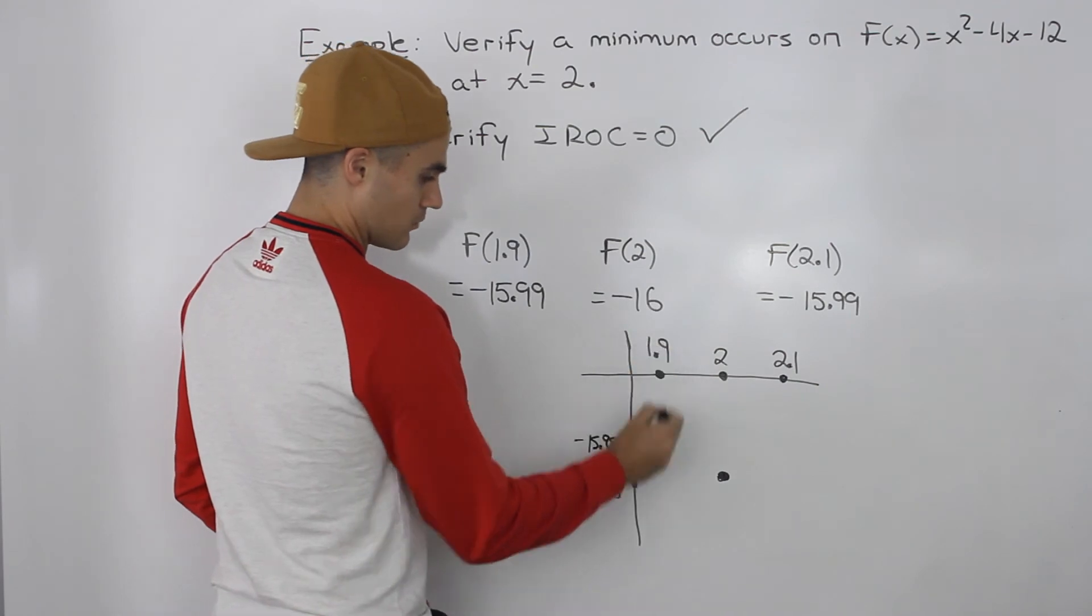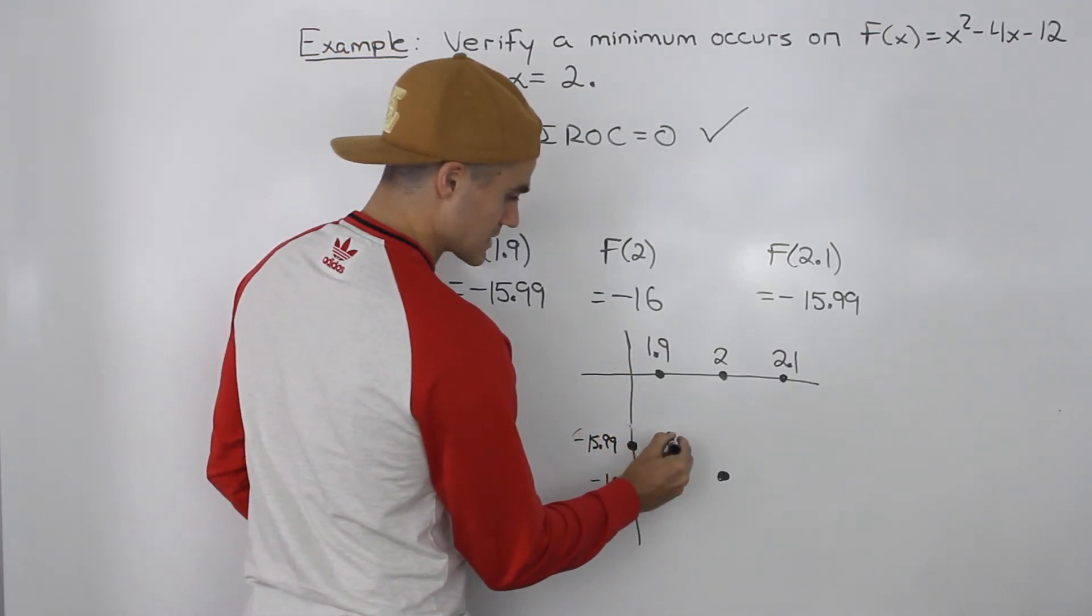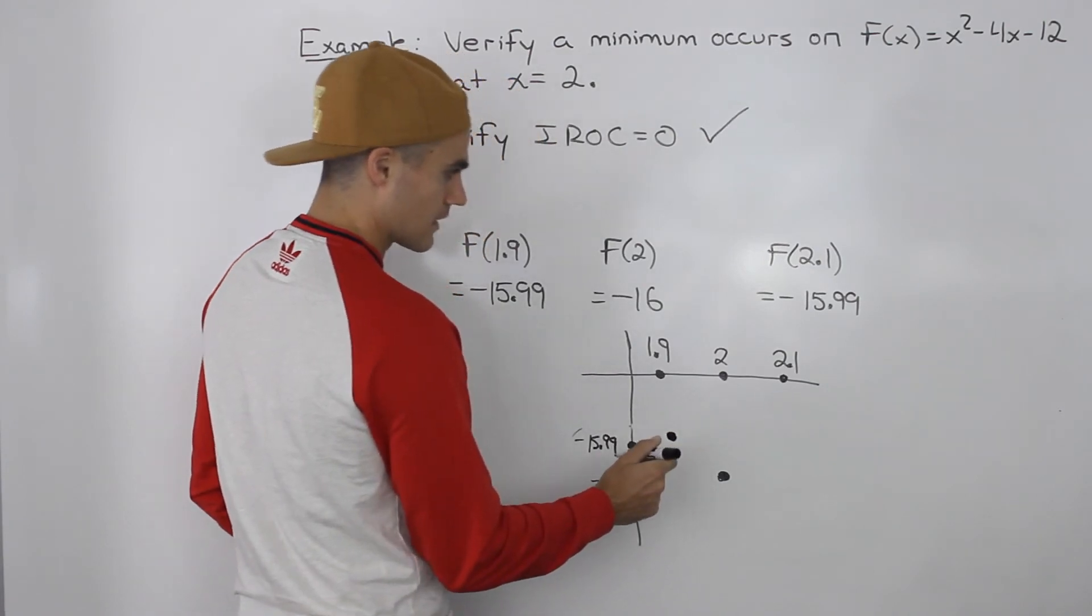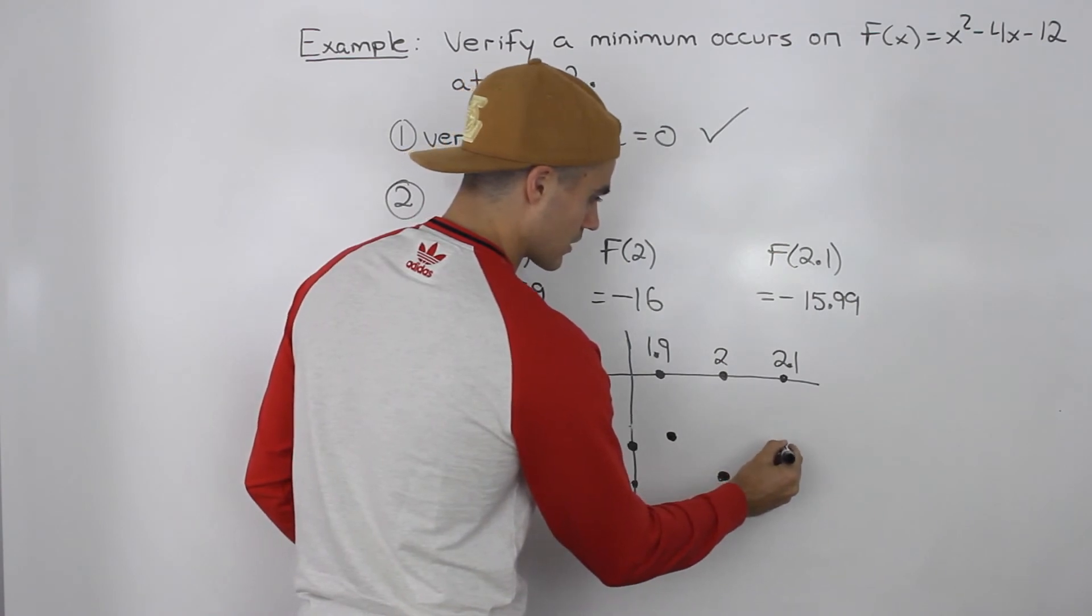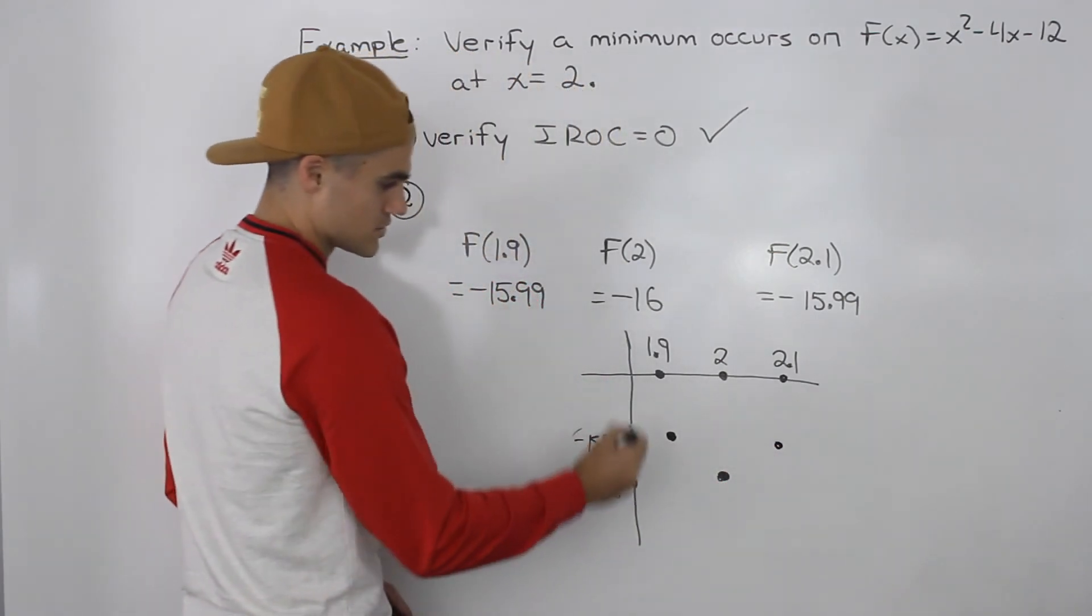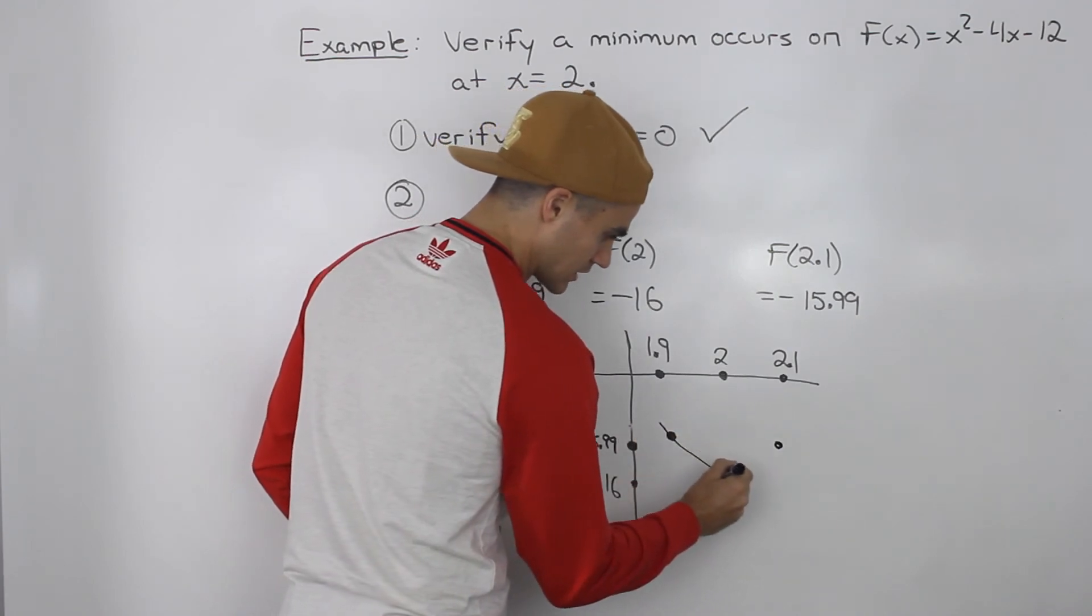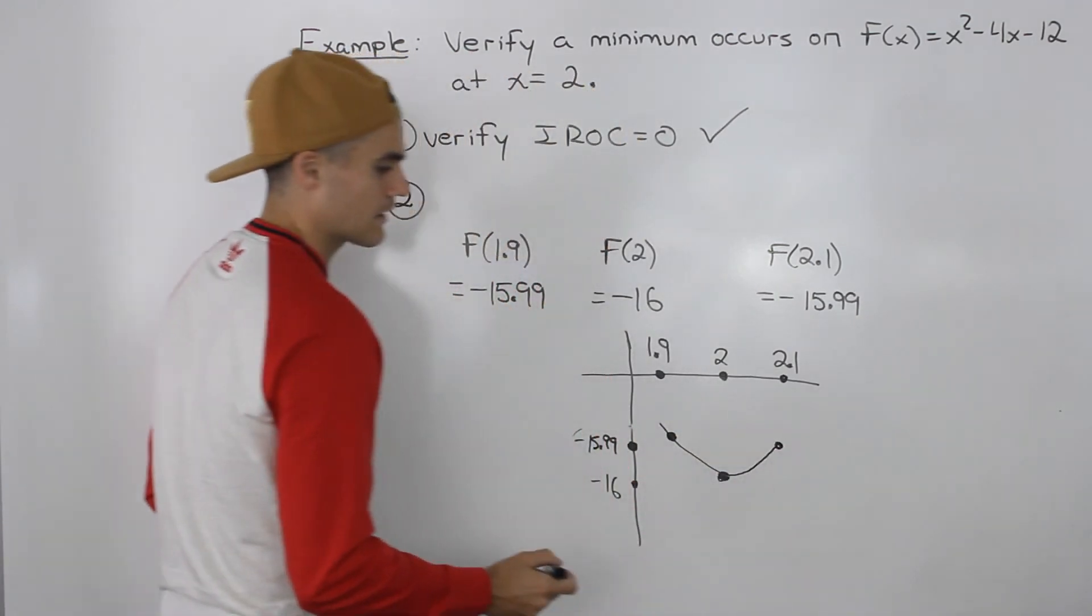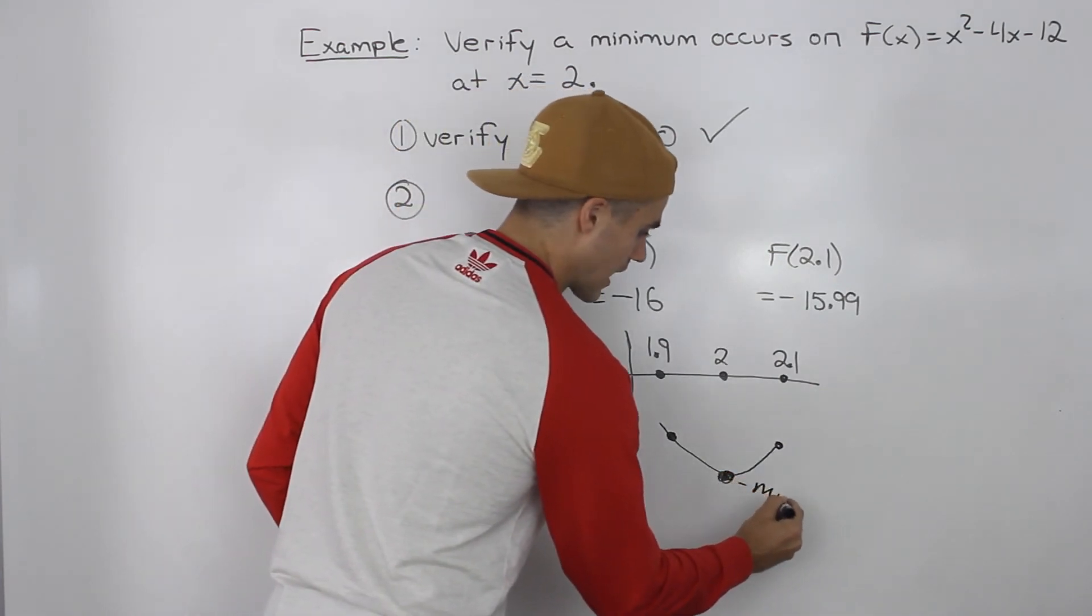So at this x value 1.9, this y value -15.99 is occurring. That's going to be like here. And then same thing, f(2.1) is -15.99, so that's going to be occurring here. If we draw this portion of the function, it's going to look something like that.